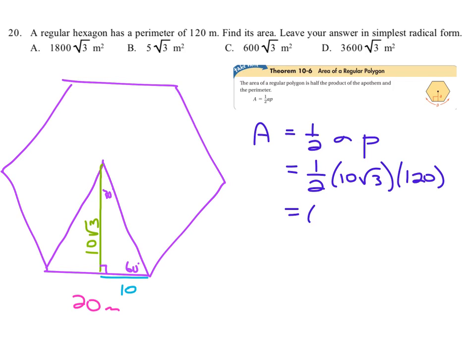Okay. What's one-half of 120? It's 60. So then 60 times 10 root 3. 60 times 10 is 600. So 60 times 10 root 3 equals 600 root 3.